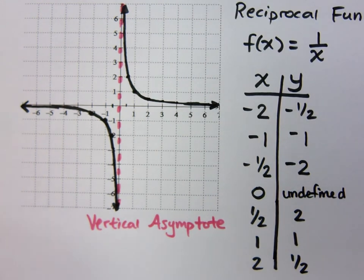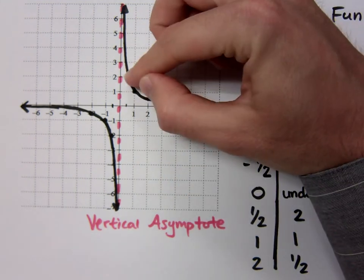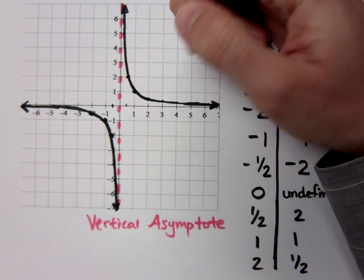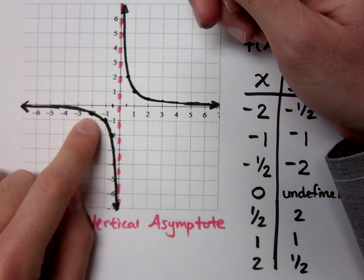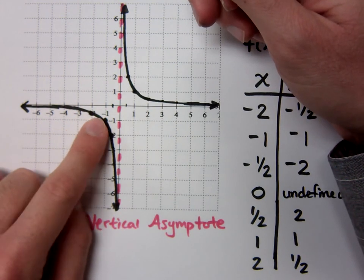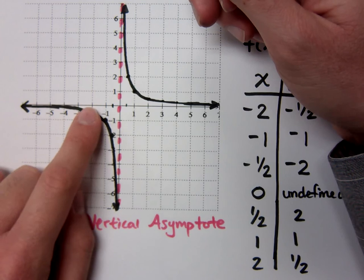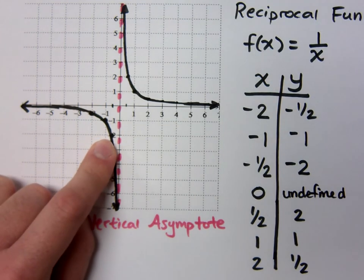This is what your reciprocal function looks like. The important points to know are these three points that we have right here and the three points that are on the other side right here, the negative 2, negative 1/2, negative 1, negative 1, excuse me, and negative 1/2, negative 2. Those are the key points that you need to know.